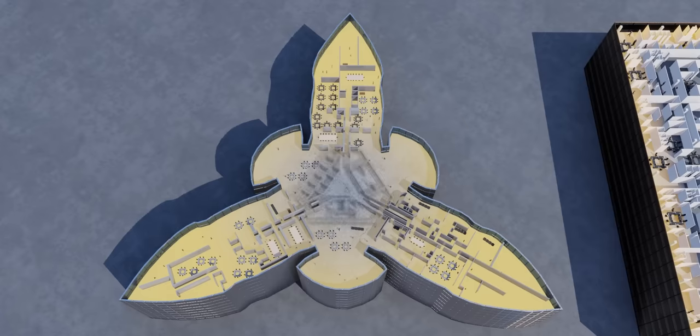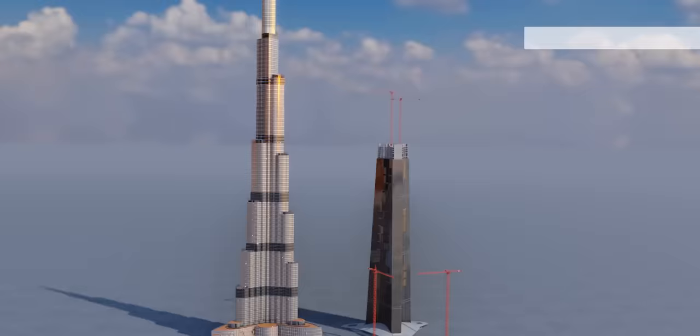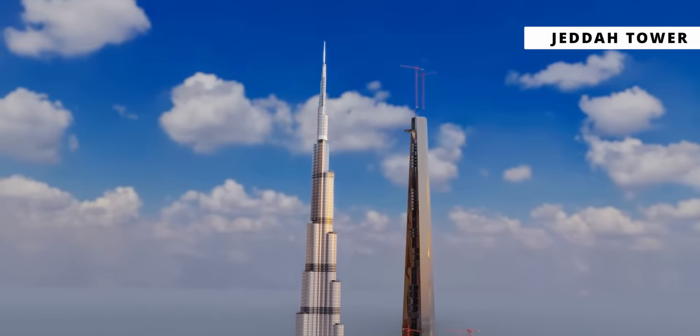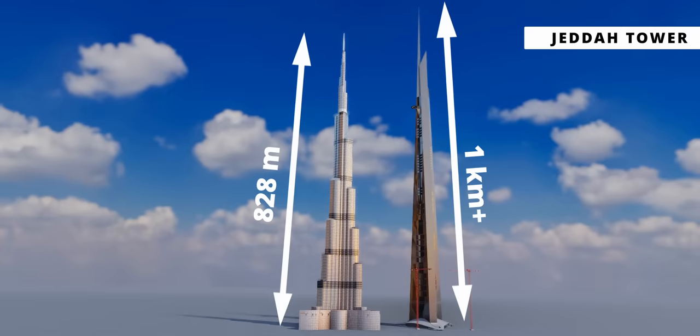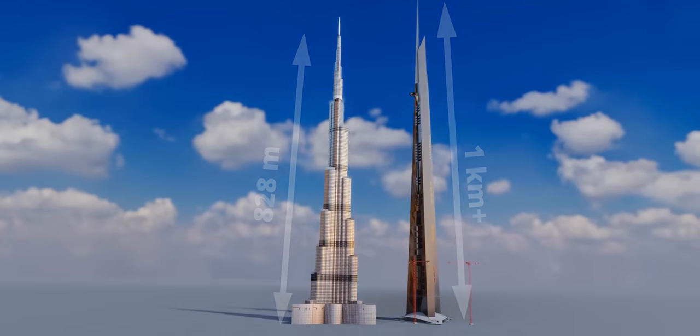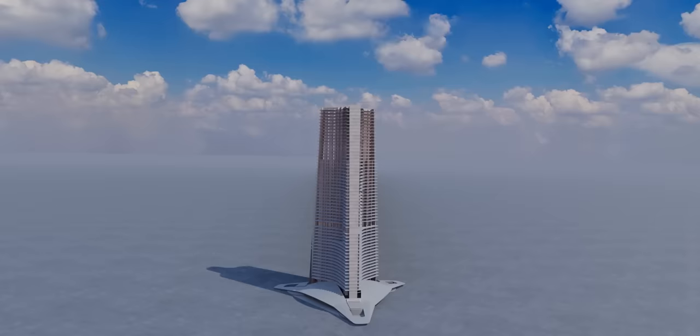The Jeddah Tower, a skyscraper under construction in Saudi Arabia, is set to become the world's tallest building at more than one kilometer in height, surpassing the Burj Khalifa by 180 meters. Construction of the Jeddah Tower resumed in 2023 after a period of inactivity.